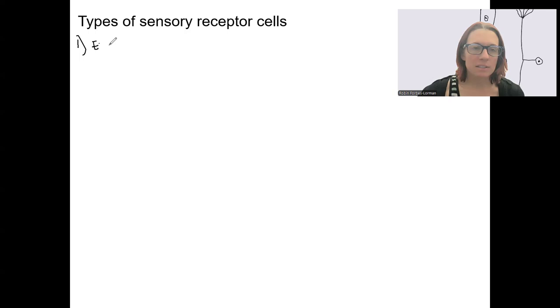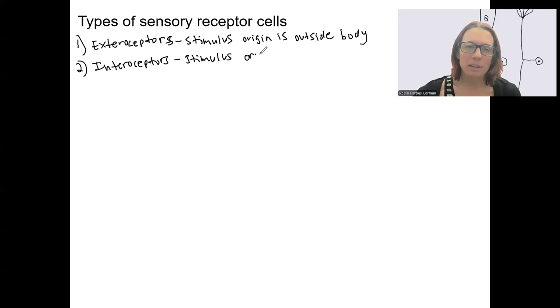So there's something called exteroceptors. This is when the stimulus origin is outside of the body, the external. Any guess as to what the other type is? Interoceptors. So the stimulus is originating inside the body. So we'll have examples of both.